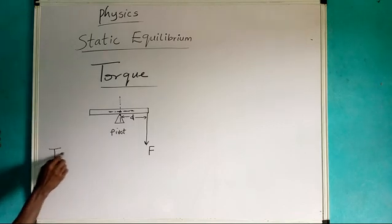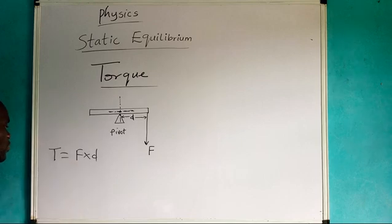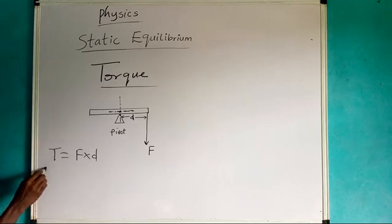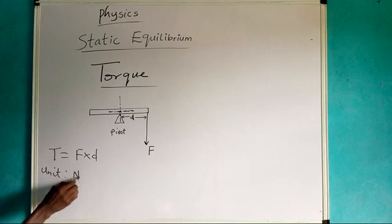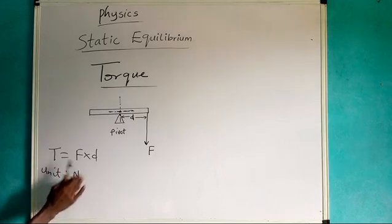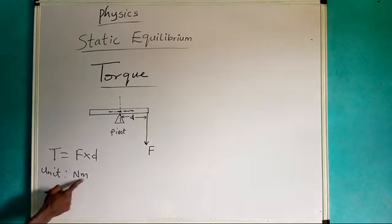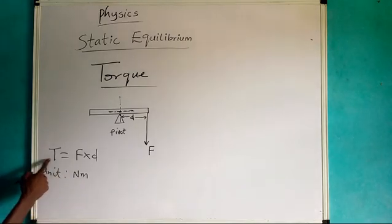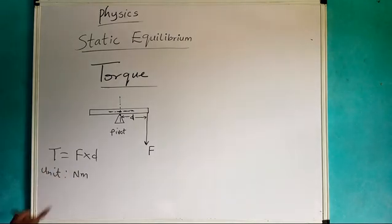What is the formula for torque? It is simply the product of force and distance. The unit for torque is Newton-meter. Take note: F is in Newtons while distance is in meters. Therefore, torque has the unit of Newton-meter.